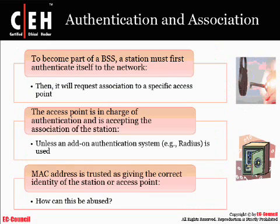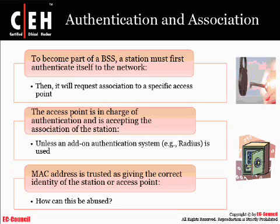When someone is attempting to connect to the basic service set, or associate with the access point, they go through three distinct phases. They'll go through a phase where they are unauthenticated and unassociated. Then they'll get authenticated, but they're not yet associated. When you're authenticated, your machine has been accepted by the access point, but you are not yet allowed to pass data through it. A machine can be authenticated with several access points at once, but only associated with one.